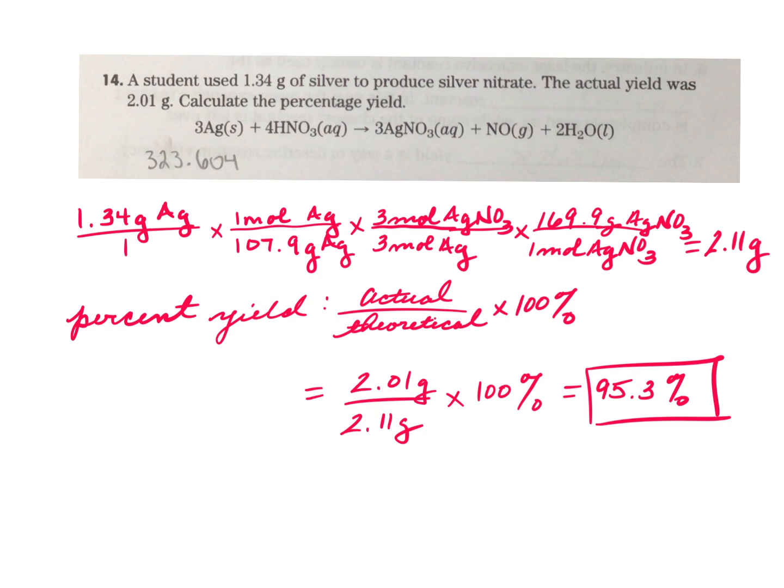So what you're going to do is very similar to what we did today on the board. You're going to take the 1.34 grams of silver, that's what you're starting with, you're going to convert that to moles of silver just like you did in the last problem. Then you're going to go from moles of silver to moles of silver nitrate and that's a three to three or one to one relationship because you can see they both have a coefficient of three in the balanced equation.